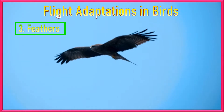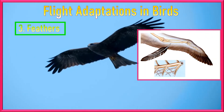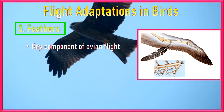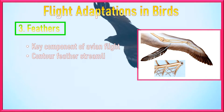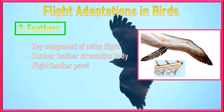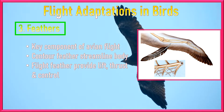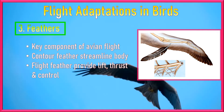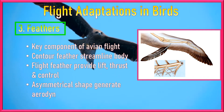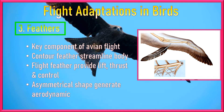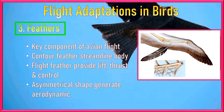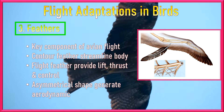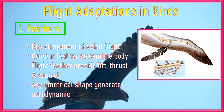Number 3: Body Covering of Feathers. Aerodynamics means reducing air drag or resistance, and feathers are key components of avian flight. Contour feathers streamline the body, reducing air resistance, while flight feathers on the wings and tail provide lift, thrust, and control. The asymmetrical shape of these feathers produces aerodynamic forces required for sustained and smooth flight. For details of feathers in birds, please watch our video on birds' feathers.